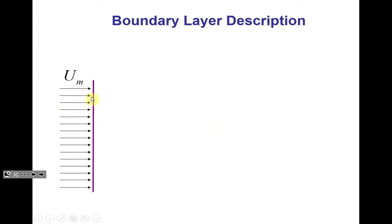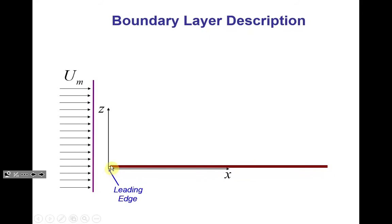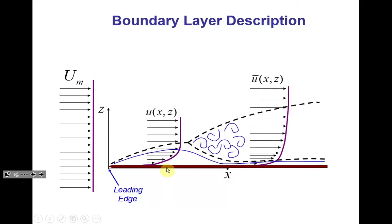Let's look at how the boundary layer develops along a plate inserted in uniform flow. We use a coordinate system starting at the leading edge of the plate, with orthogonal coordinate Z and streamwise coordinate X. At the very beginning, due to the no-slip condition, the boundary layer emerges and grows along the plate. Initially it will be laminar — because the layer thickness is very small, the Reynolds number is small, the flow is stable.